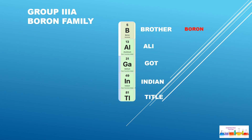Brother is for Boron, Ali is for Aluminium, Got is for Gallium, Indian is for Indium, and Title is for Thallium.